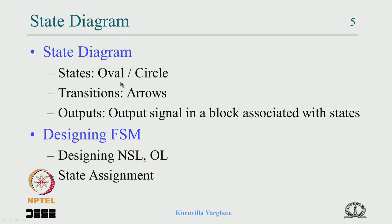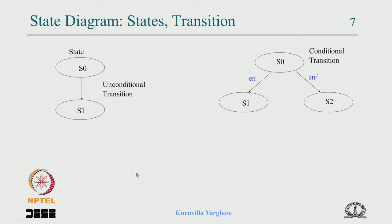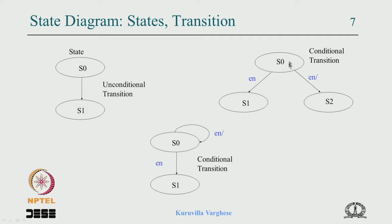In a state diagram, states are represented by ovals or circles, transitions are by arrows, and output is associated in a block with the oval. Once you draw that, you will be able to come out with the truth table of next state logic and output logic after the state assignment. We have seen some kind of unconditional transition going from one state to another state on the next clock edge.